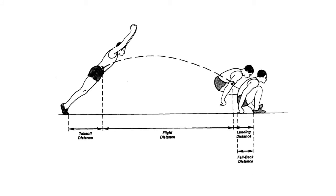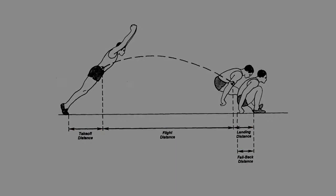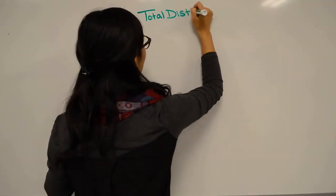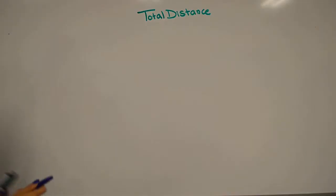This goal can be further broken up into takeoff distance, flight distance, landing distance, and fallback distance. So let's develop a deterministic model with total distance at the top, which is made up of the other important distances below.